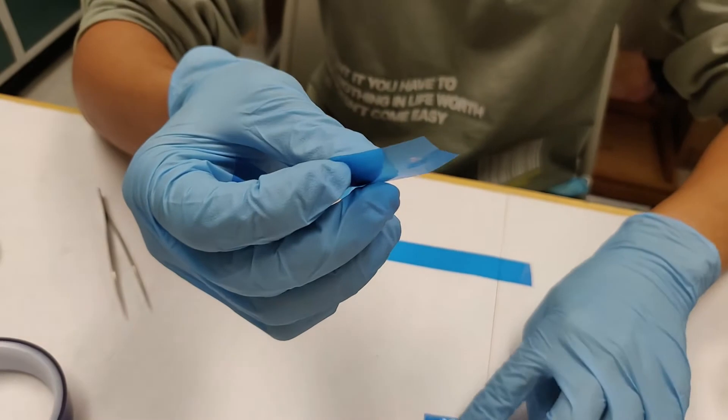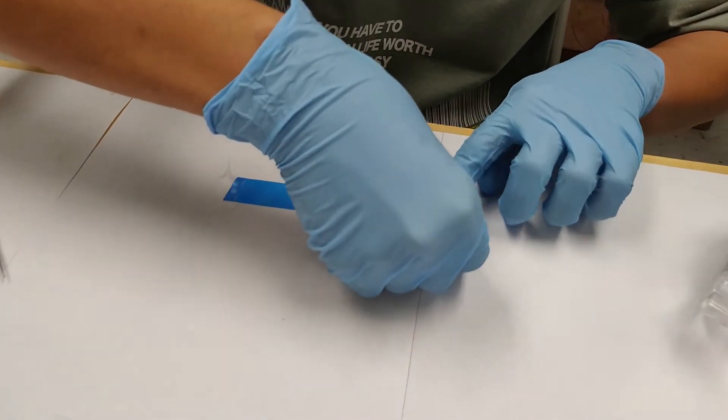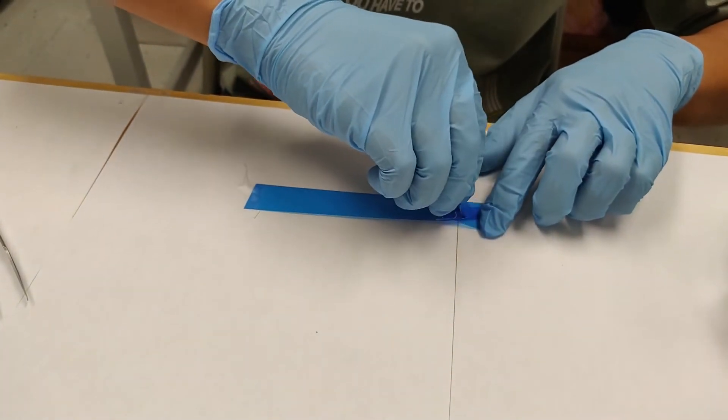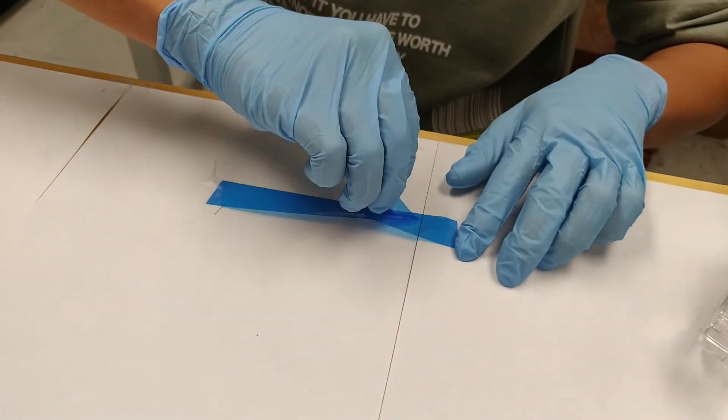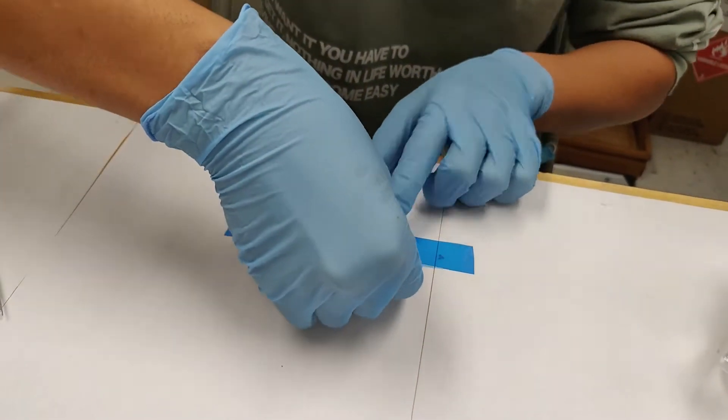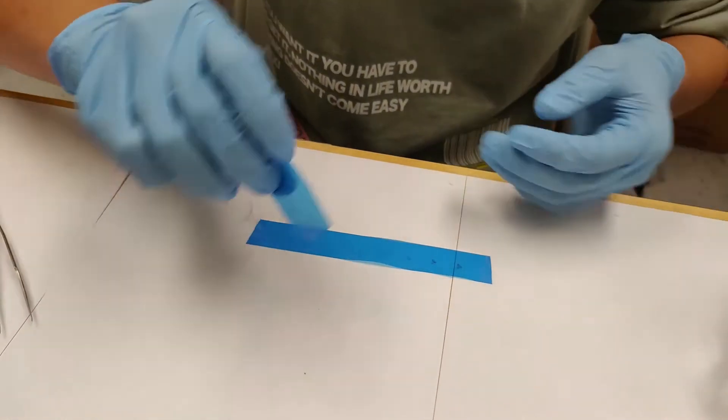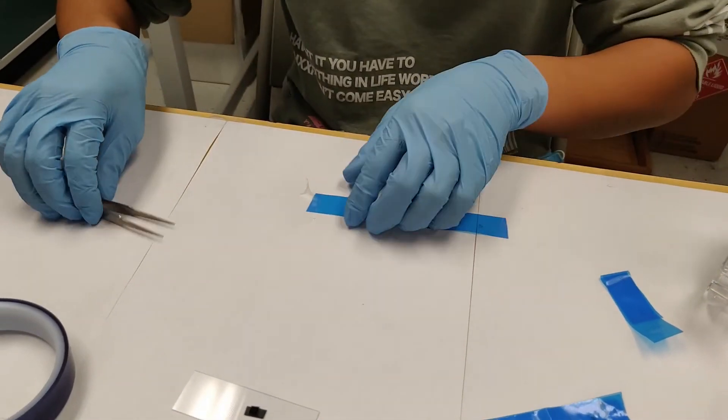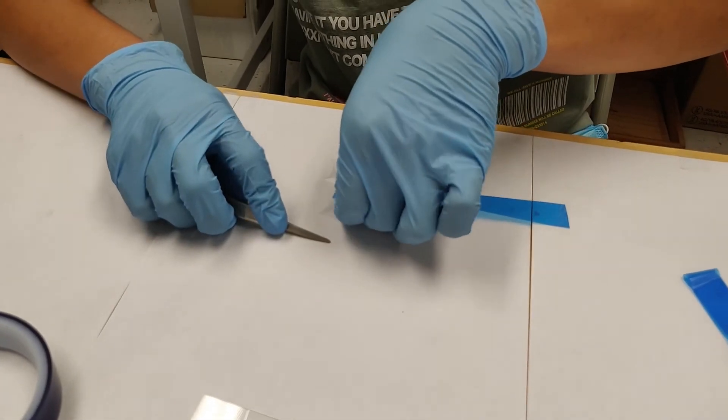So this is already thinned once. And now what you want to do is thin it again until it becomes very transparent. Alright, so right there is good enough. So you take this piece of tape, and this is the piece you'll be using to exfoliate onto the substrate.